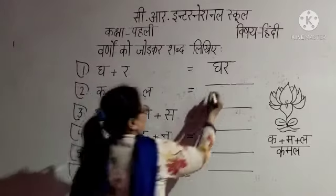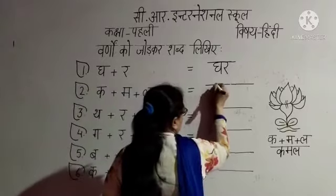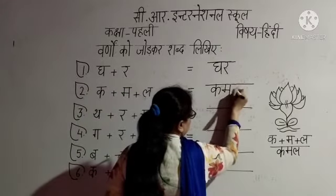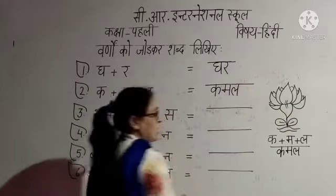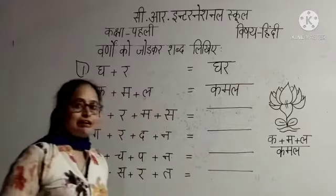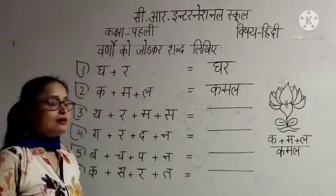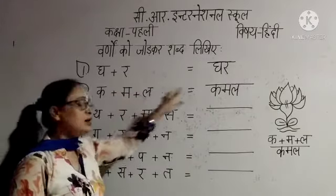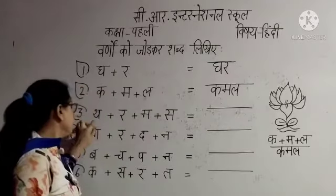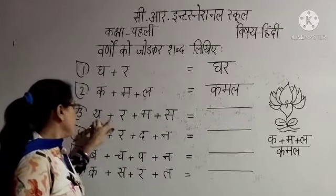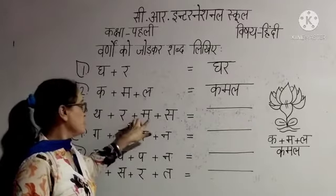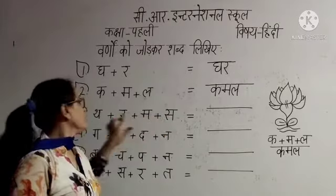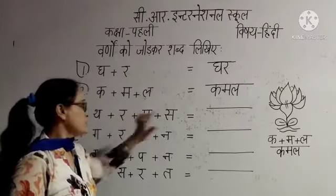Ma'am ने बताया — Kamal। Ka, ma, la — Kamal। आपने मन के जैसी writing नहीं की है — क्या है यह? Kamal। Ka, ma, la — Kamal। Next क्या है? Tha plus ra plus ma plus sa — Tha, ra, ma, sa।